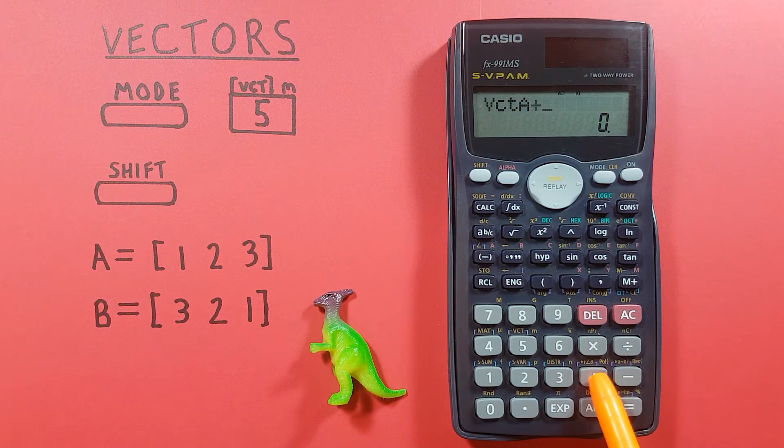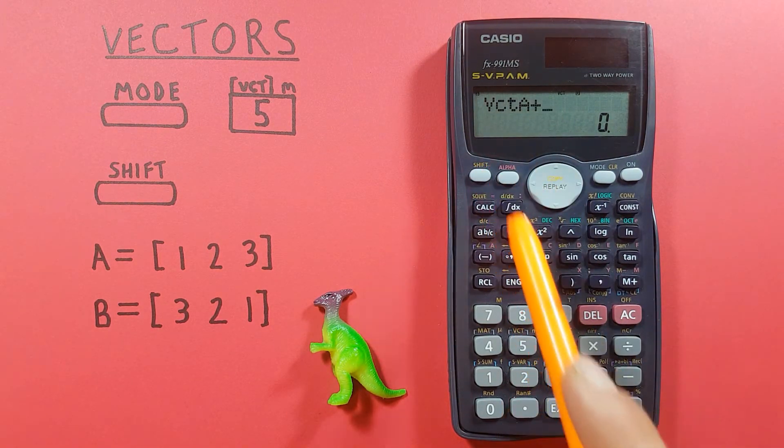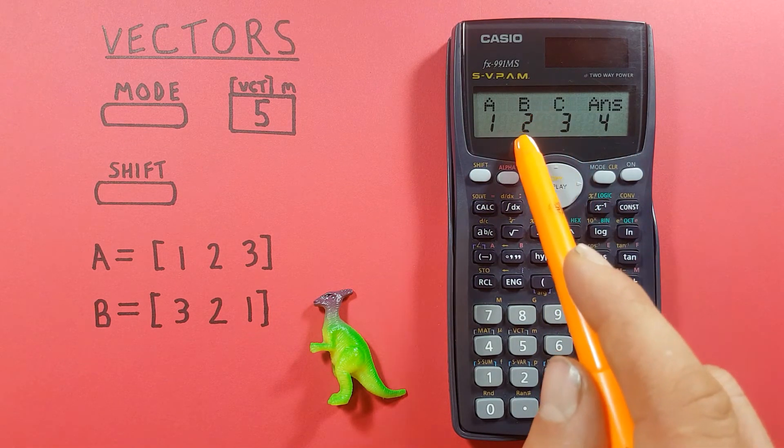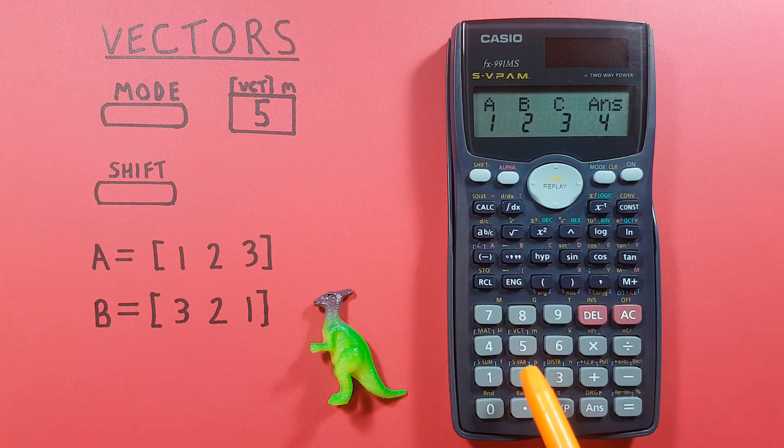You just hit plus there and then go shift 5 again, 3 for vectors, and we want to add it to our B vector so that's number 2.